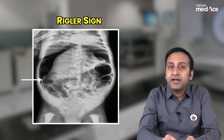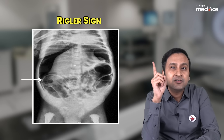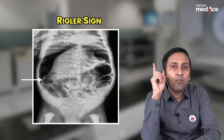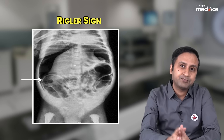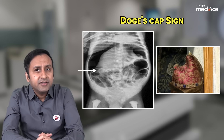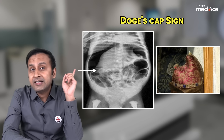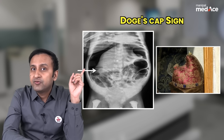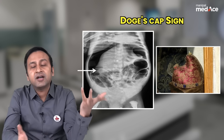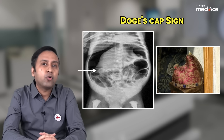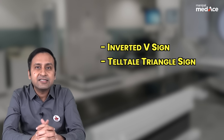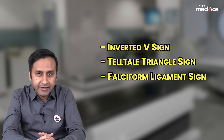If the air goes on and outlines the bowel wall, it results in formation of the Rigler's double bowel wall sign. Similarly, there are signs called Doge's cap sign, where air is seen trapped between the hepatorenal pouch. There are also some other signs like inverted V sign, telltale sign, and falciform ligament sign.